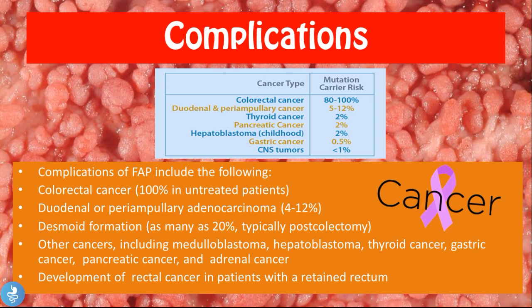Other complications include medulloblastoma, hepatoblastoma, thyroid cancer, gastric cancer, pancreatic cancer, adrenal cancer, and the development of rectal cancer in patients with a retained rectum. These cancers arise because the defective APC tumor suppressor gene fails to suppress cancer cell development throughout the entire body, not just in the colon.